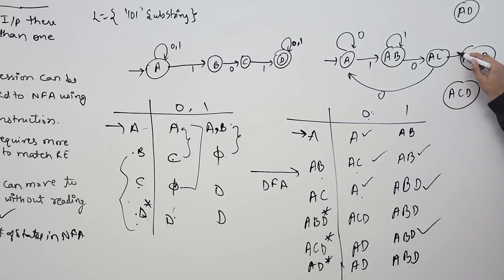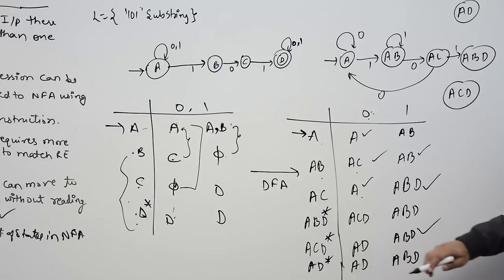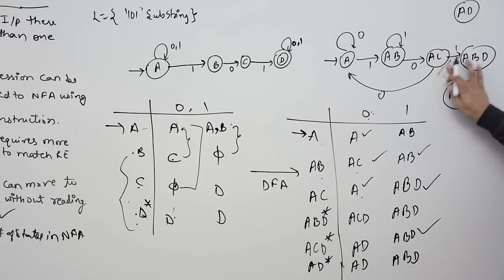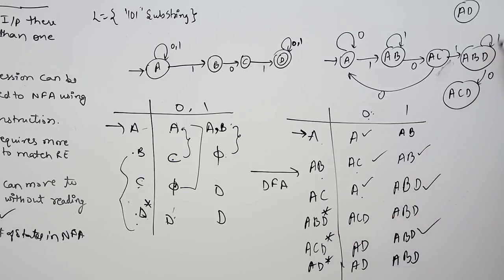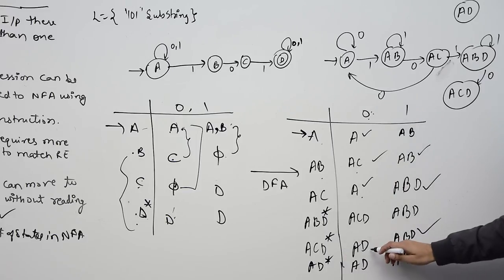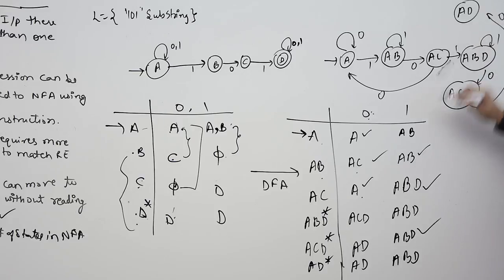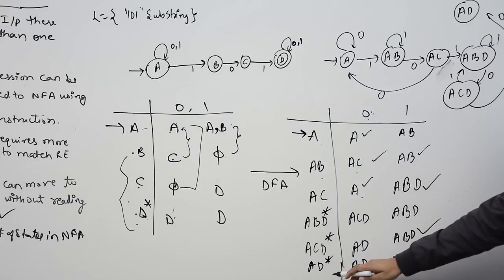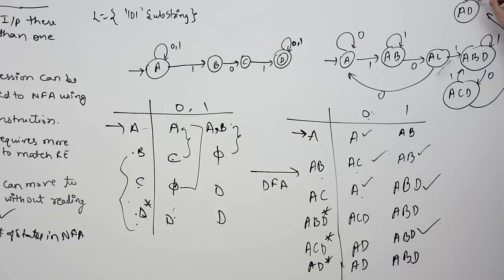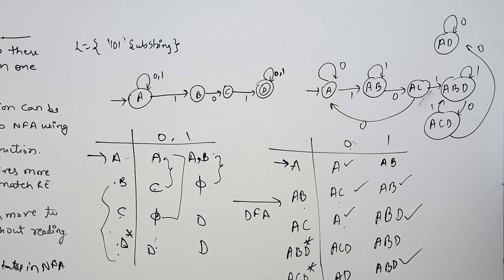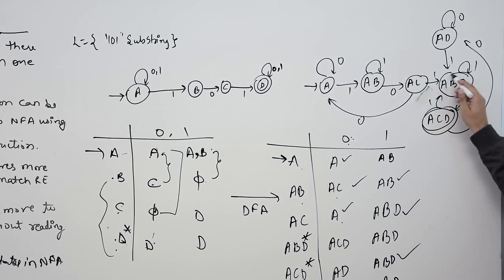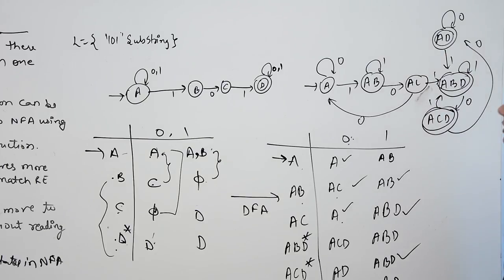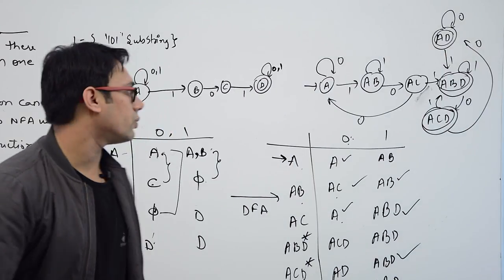From AC on 0 go to A, on 1 go to ABD. From ABD on 0 go to ACD, on 1 go to ABD. From ACD on 0 go to AD, on 1 go to ABD. From AD on 0 go to AD, on 1 go to ABD. The final states are ABD, ACD, and AD.